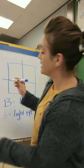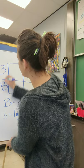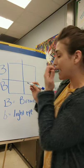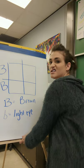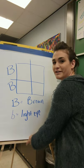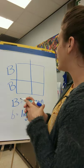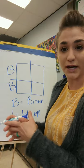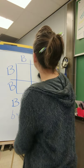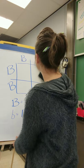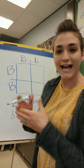If I were purebred for brown eyes, I would be capital B and capital B. Now let's say the father of the offspring is a hybrid for brown eyes — that would be capital B, lowercase b.